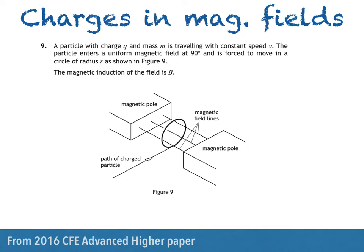A particle with charge q and mass m is travelling with constant speed v. The particle enters a uniform magnetic field at 90 degrees and is forced to move in a circle of radius r, as shown in figure 9. The magnetic induction of the field is b.